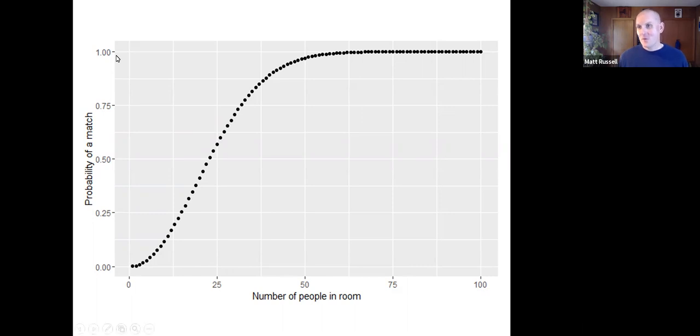And now where we break even or where there's a 50% chance that two people share the same birthday is when we have 23 people in a room. And so we might expect if we were betting people, we might not bet on two people sharing the same birthday if there were less than 23 people. But we might bet on it if there were more than 23 people.